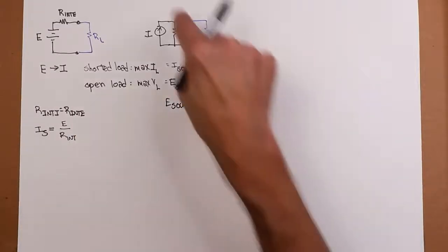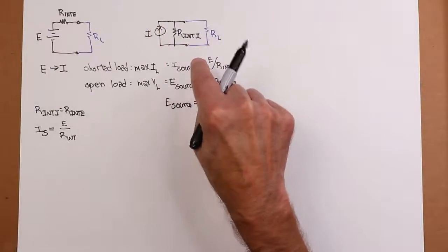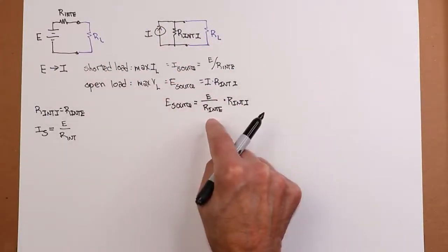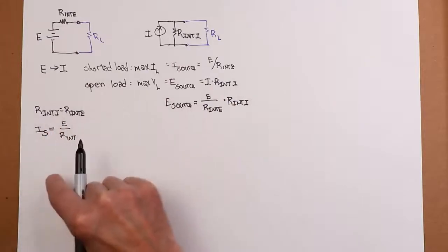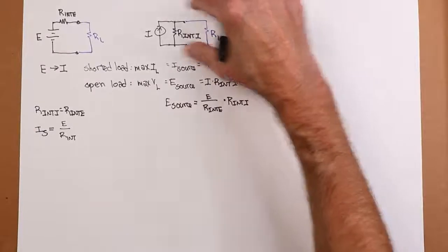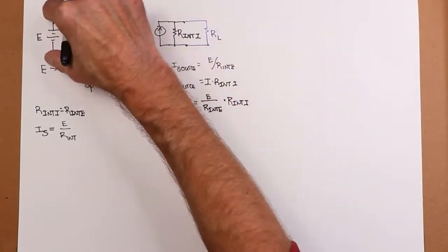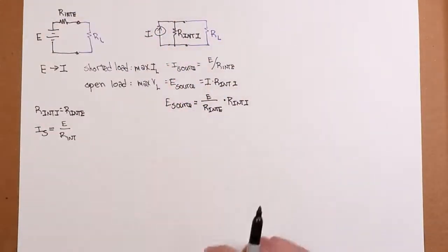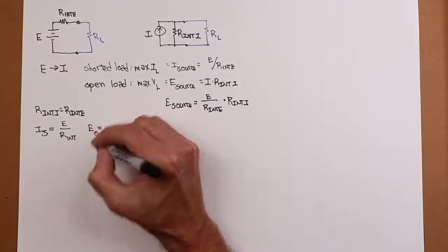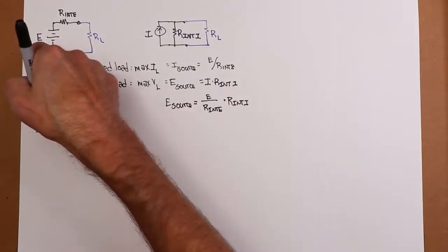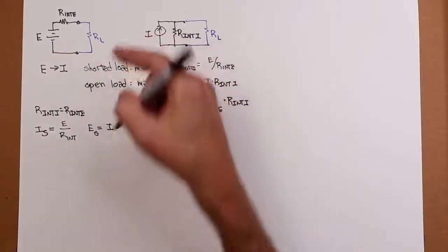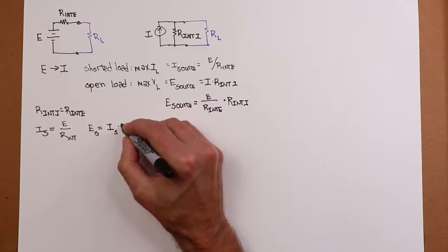If I want to go the other way, if I have the current source, then instead of looking at the shorted load case, we look at the open load case, and I use Ohm's law on that. In other words, we say all of I flows through R internal. That tells me the open load voltage. That's what we have to have for the source back here. So I'll say that the voltage of the E source would have to be whatever this current source is times R internal.